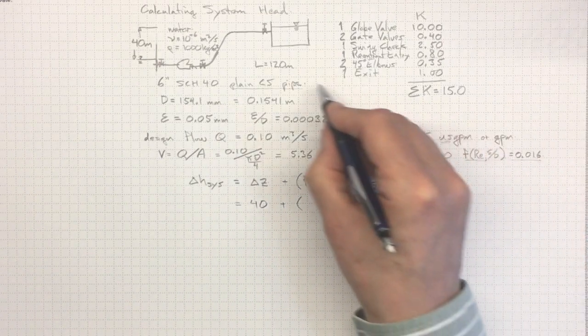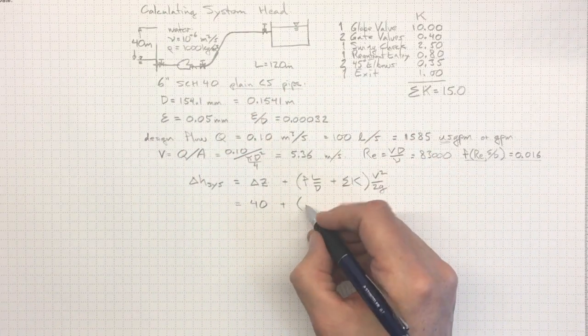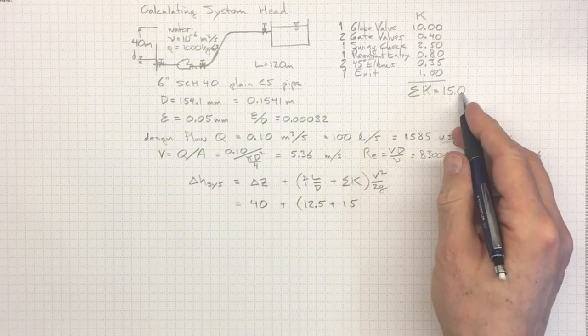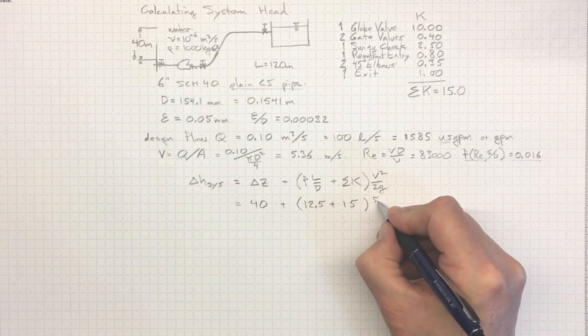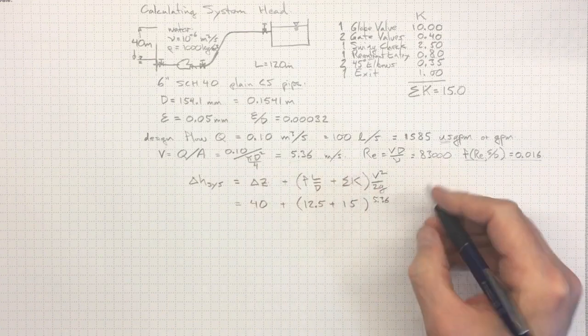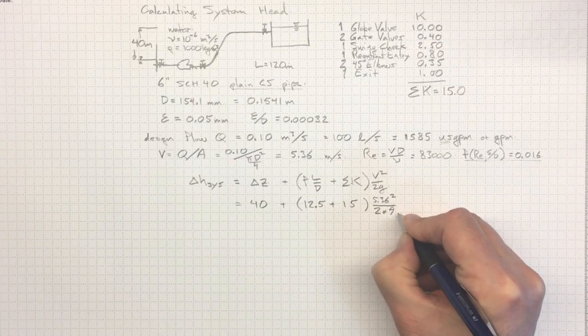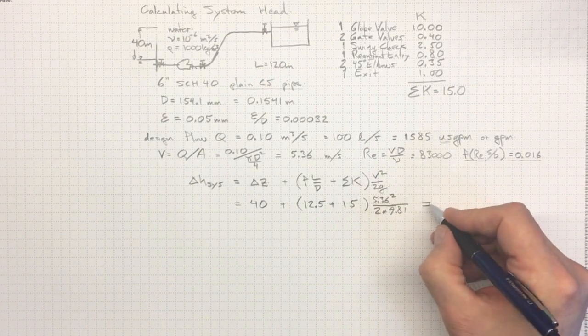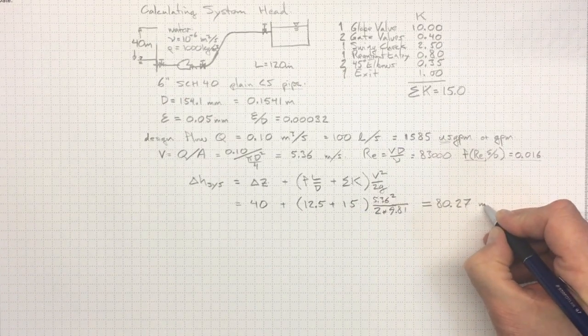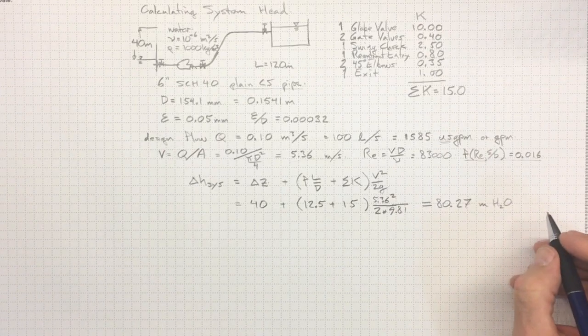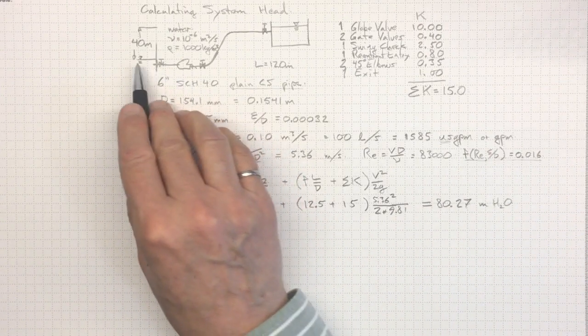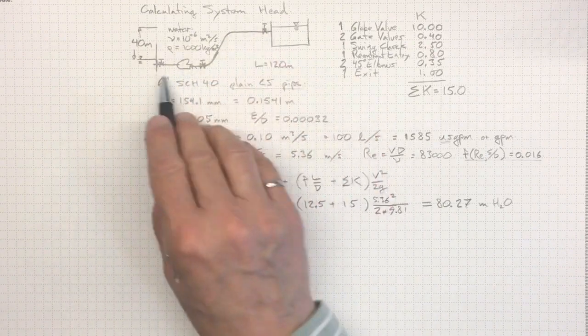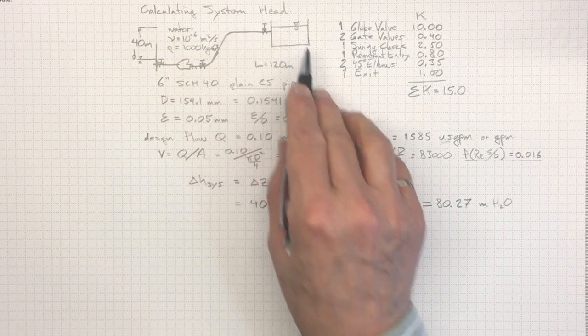So, that'll be equal to 40, plus, if I take F times L divided by D, I'll wind up with 12.5, plus 15, for the sum of the loss coefficients, times V squared 5.36 from up here over 2 times 9.81, the value of G. And if I plug all of that through, I'll wind up with 80.27 meters of water as the head rise that I would need across that pump in order to overcome the 40 meters of elevation difference, the friction along the pipe walls, and all the minor losses in each of these little fittings along the way.